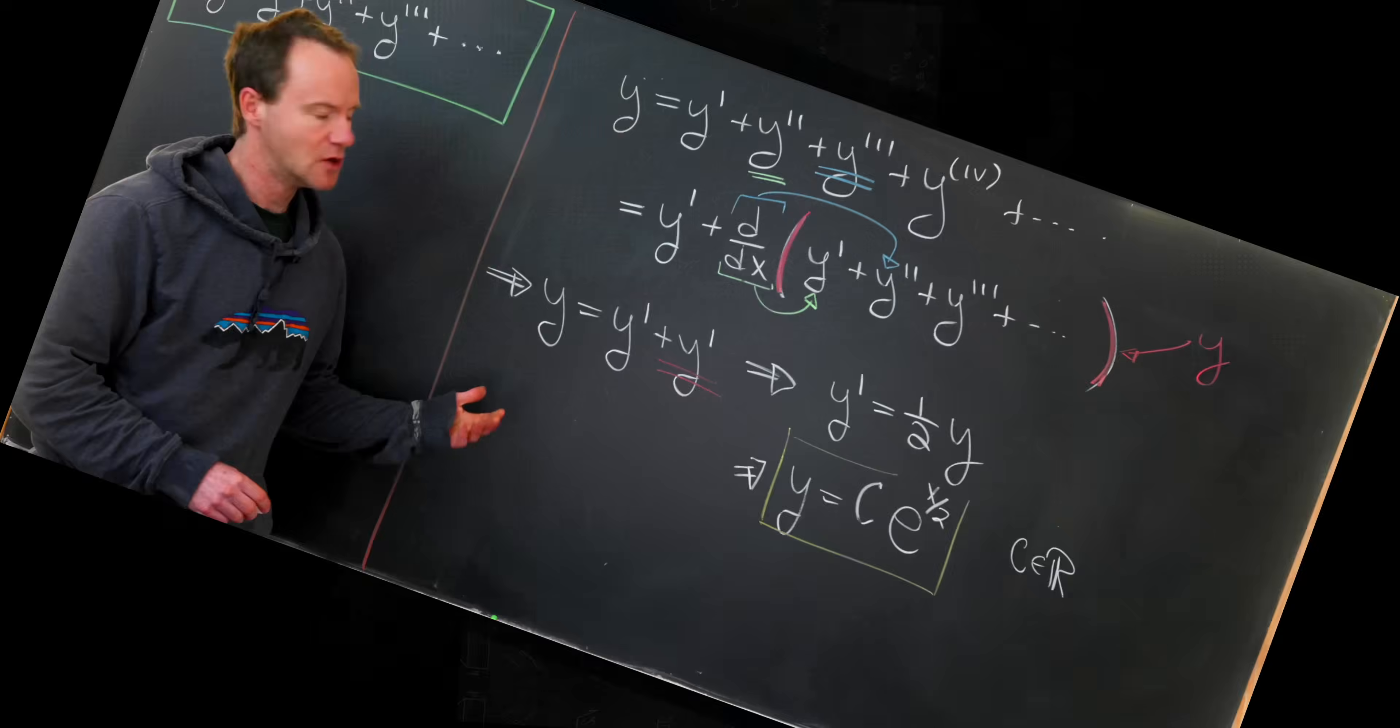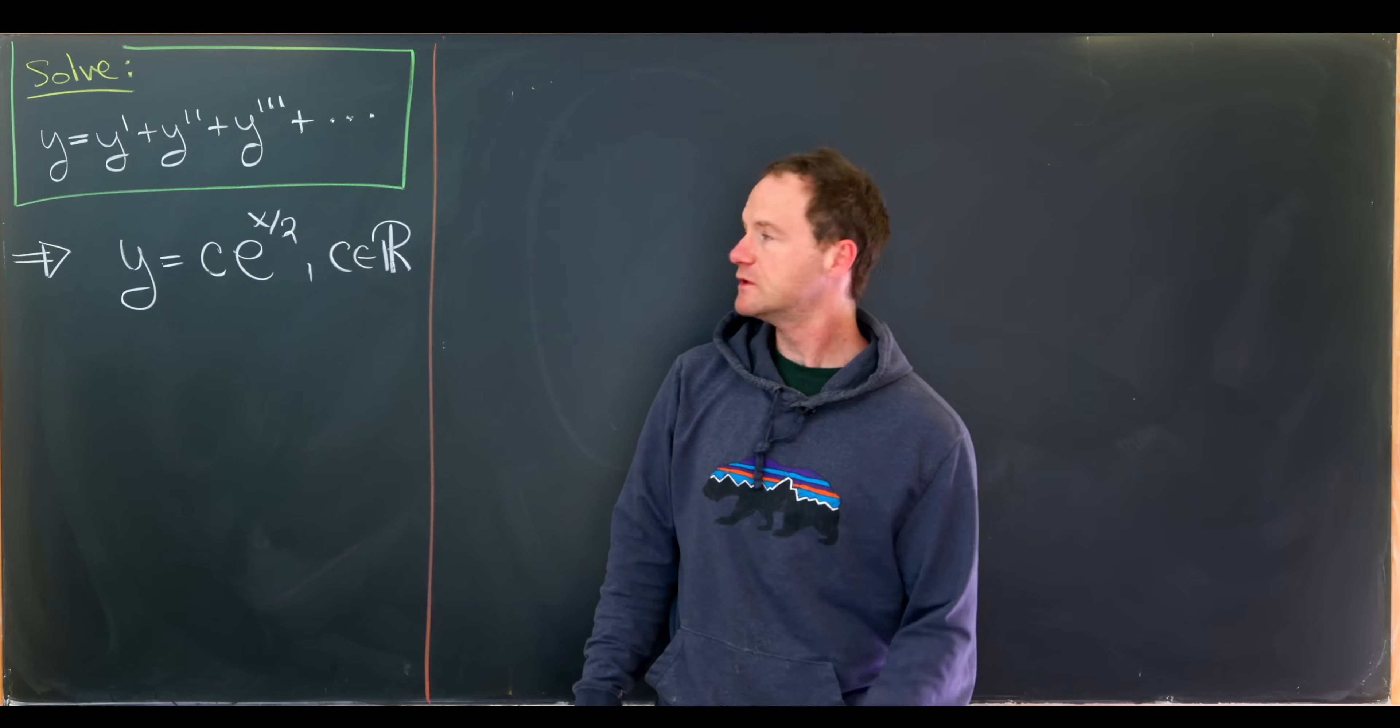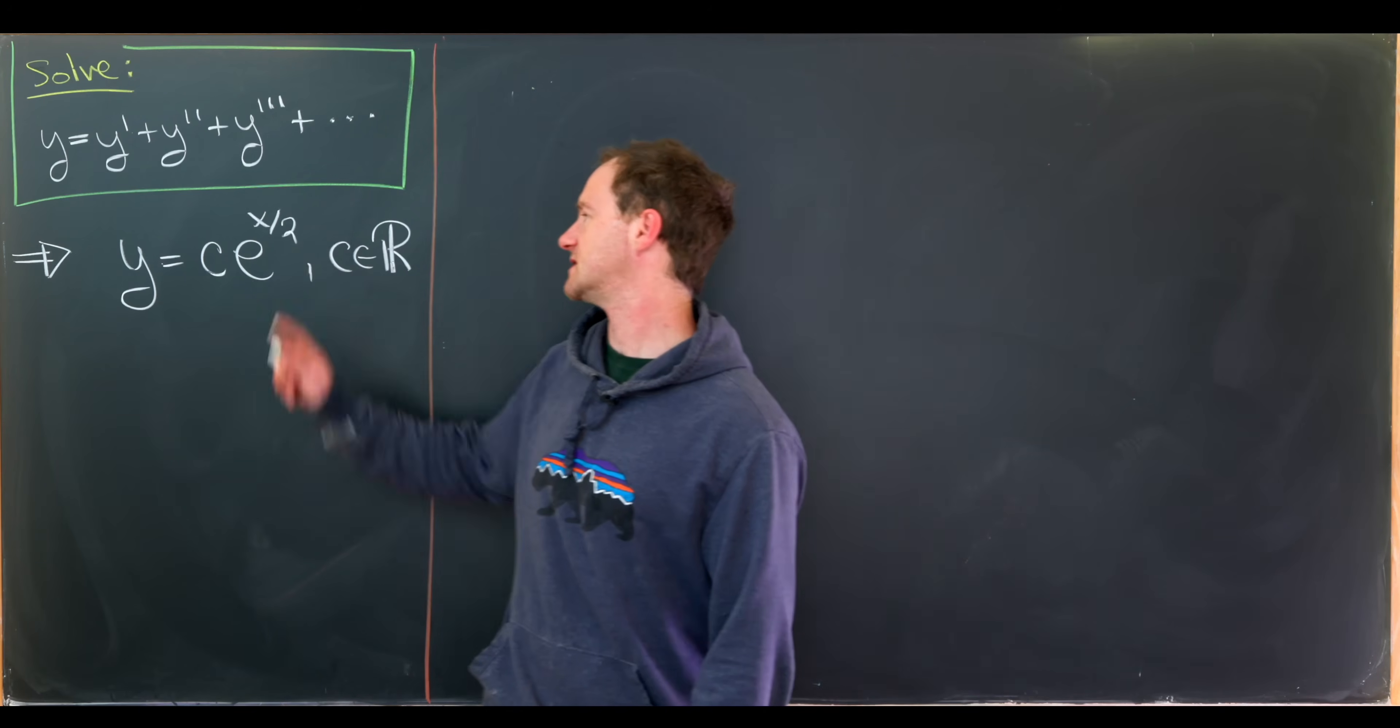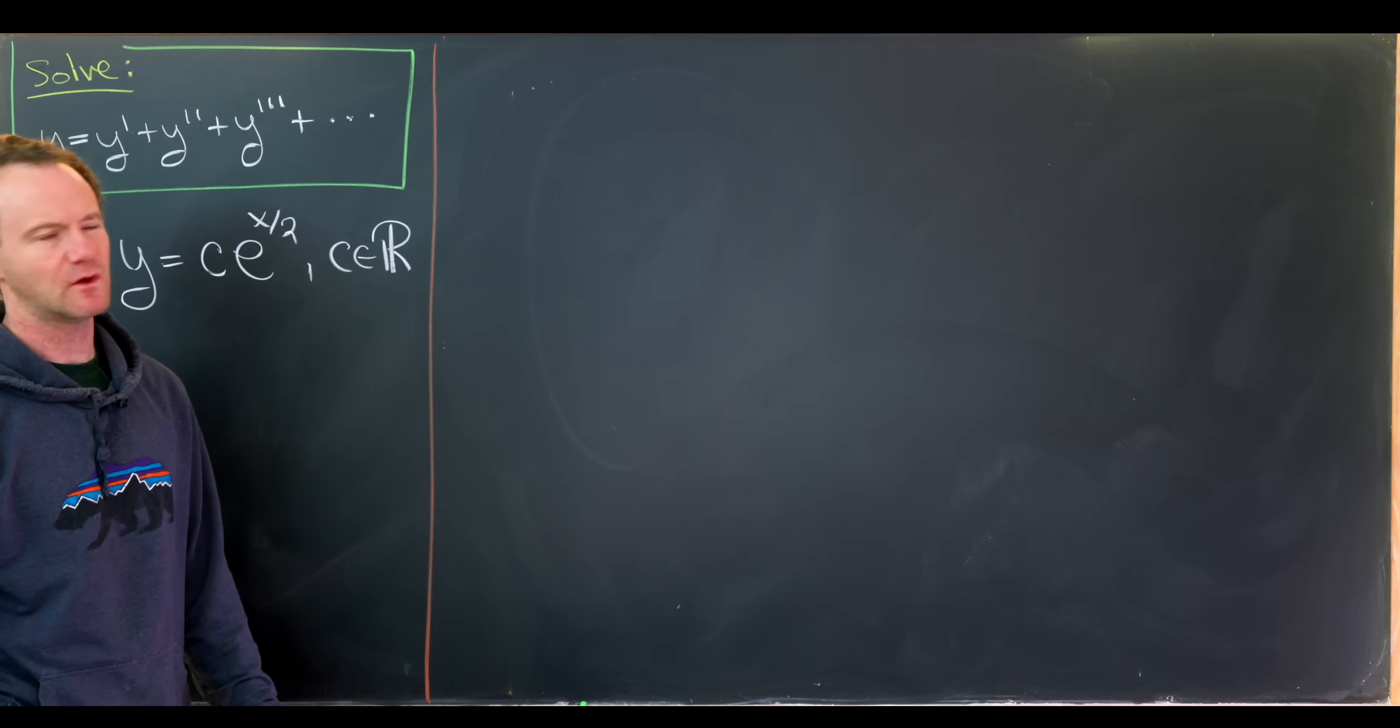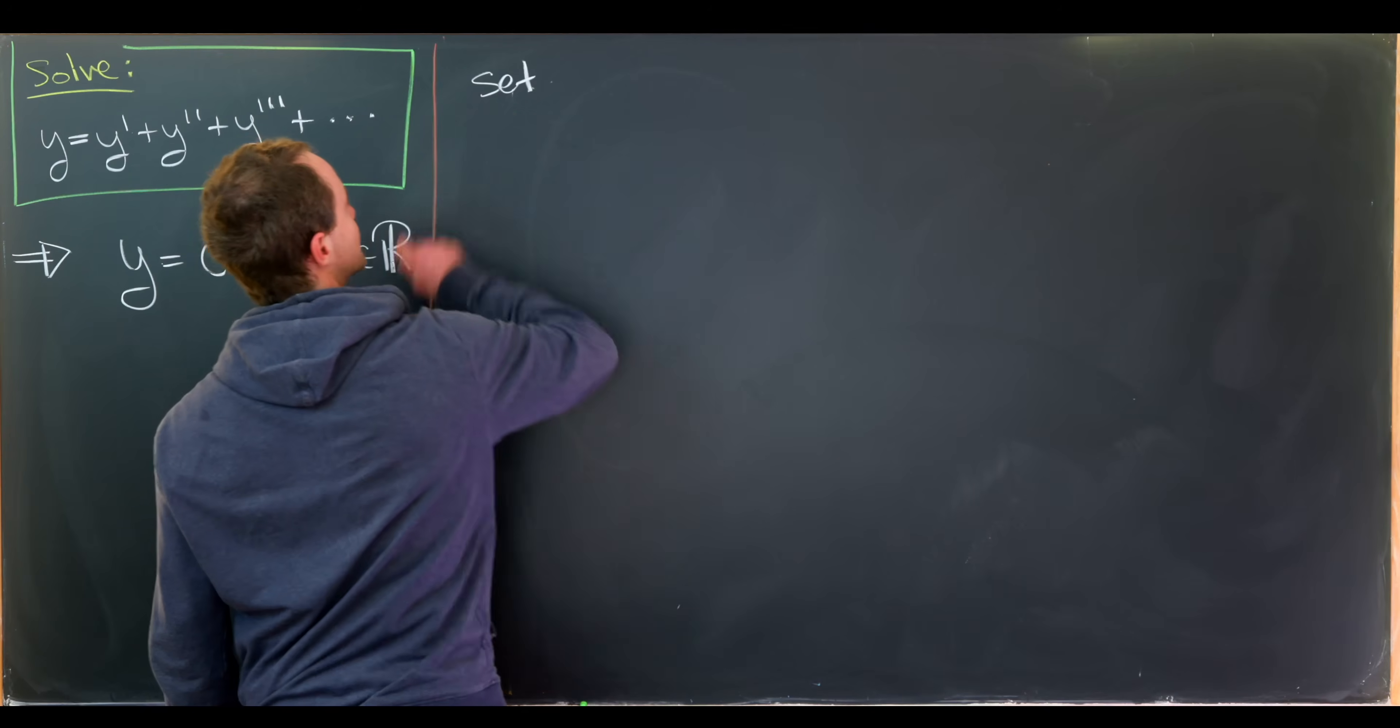As promised, what I'm gonna do now is solve this a different way which is a little bit sketchy. So we used a fairly straightforward method to get the following one dimensional family of solutions, y is c times e to the x over 2. Now we're gonna gain these solutions another way. Well actually we'll in fact gain that previous differential equation.